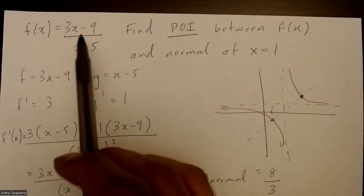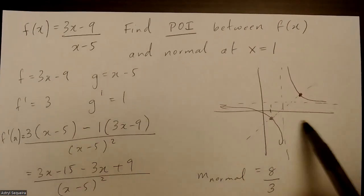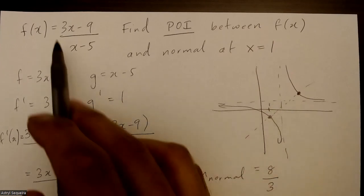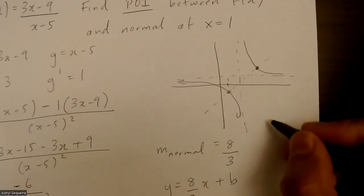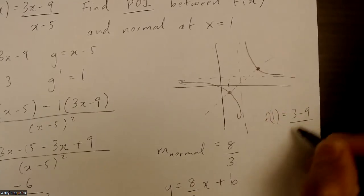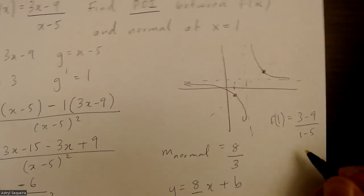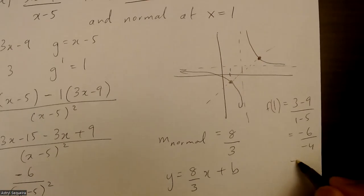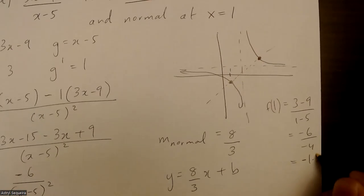I can sub in x into the original equation to find my y value at this point. So if I sub in 1 into this equation, f of 1 equals to 3 minus 9 over 1 minus 5, which is negative 6 over negative 4, which is basically negative 1.5.